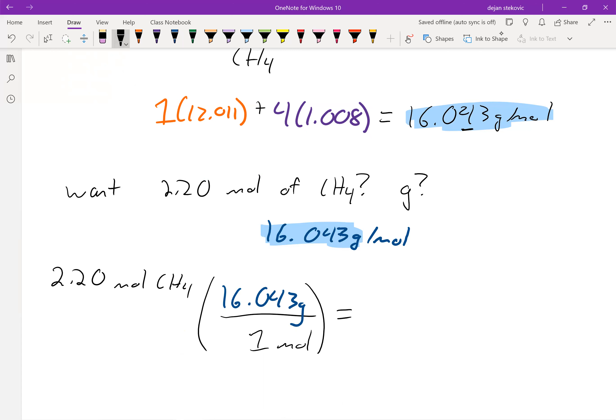And so in this case, mole would have to go down in the bottom. And it would just be 1 mole. And then your 16.043 grams would go up top. And then you just do the multiplication here. And you'd have to weigh out 35.3 grams of CH4, right? So if you wanted 2.20 moles, you'd weigh out 35.3 grams.